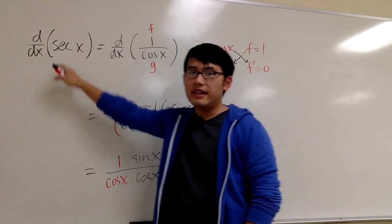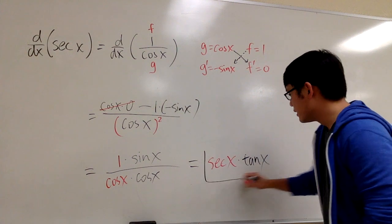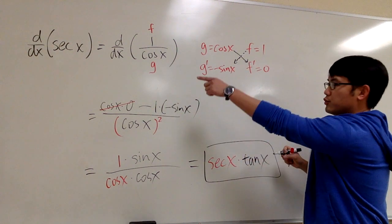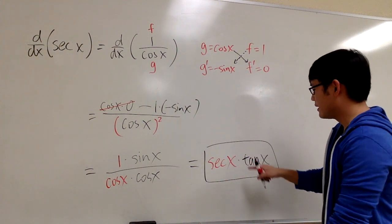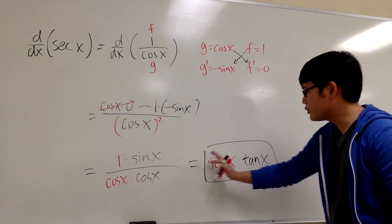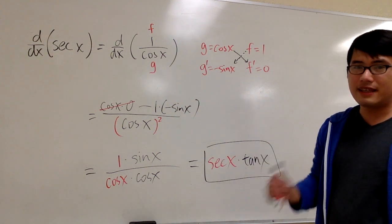The derivative of secant x is equal to secant x. Once again, this secant x repeats just like the cosecant x. And you multiply with tangent x. And make sure that this is positive. And that's it.